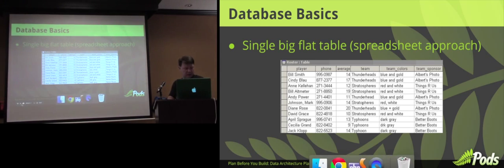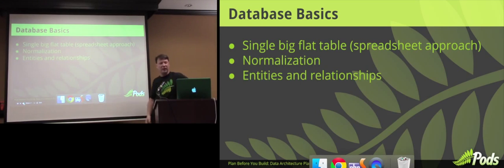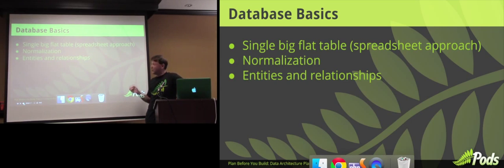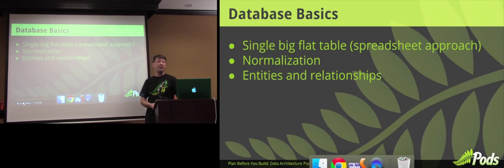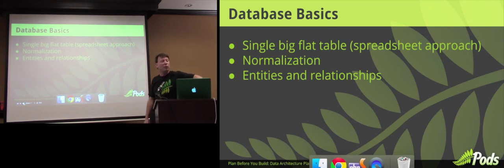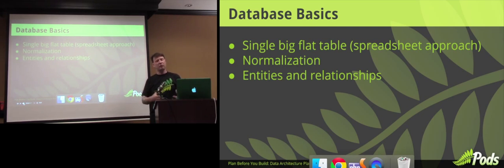There's a black art involved in something called database normalization — well beyond the scope of this, but there's a lot of information on Google. A lot of it applies to what you're going to do with data types in WordPress, though some of it won't necessarily apply to WordPress itself. You want to break things down into entities and relationships. If you have players, you want to put them in their own content type, and teams, and join those up.